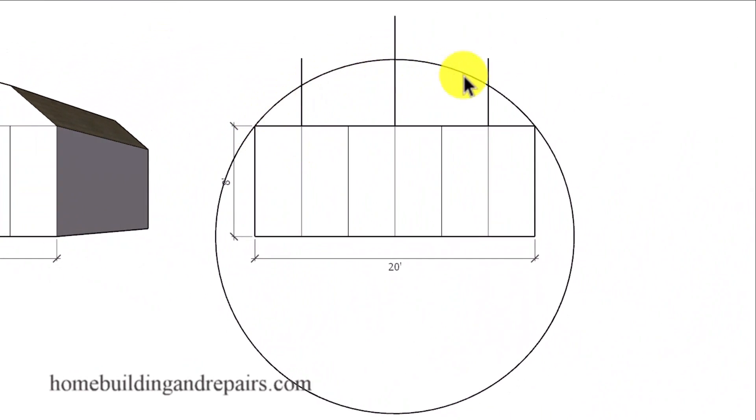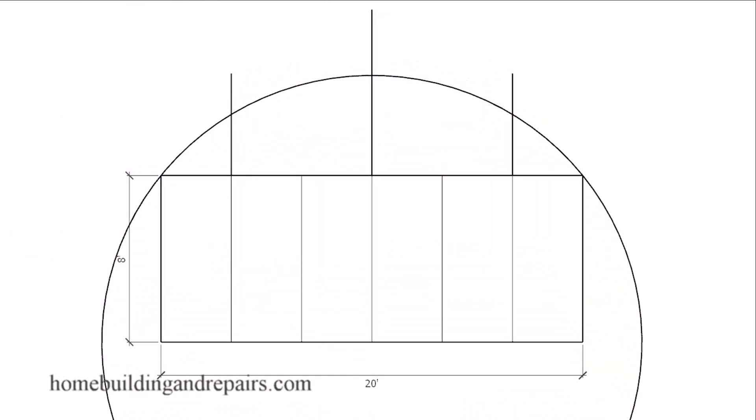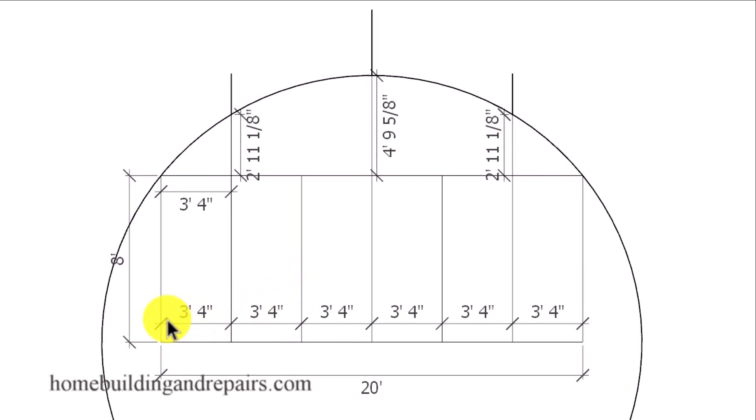You do not need to use this particular method here where we simply divided everything up into six segments down here that are all equal sized and then used the first line on each side along with the center of the building with equal measurements on both sides.